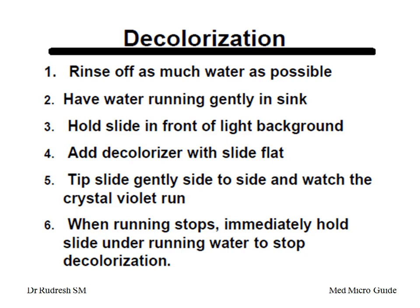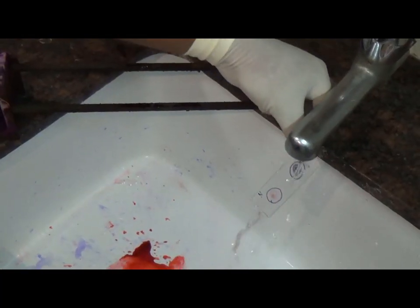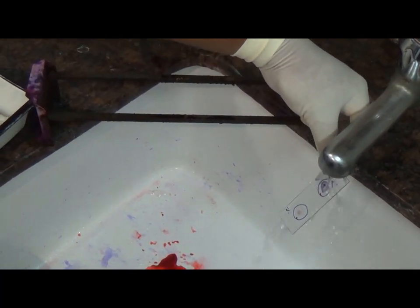Decolorization is the most important step in Gram staining, because if you under-decolorize, gram negatives will look as gram positive, and if you over-decolorize, gram positives will look as gram negative. The decolorization step is controlled by tilting the slide gently and adding the decolorizer drop by drop, watching the crystal violet running out of the slide. When the crystal violet running stops, immediately hold the slide under running water to stop decolorization. Add the counter stain, wait for 30 seconds, wash with tap water, and the Gram staining procedure is complete.